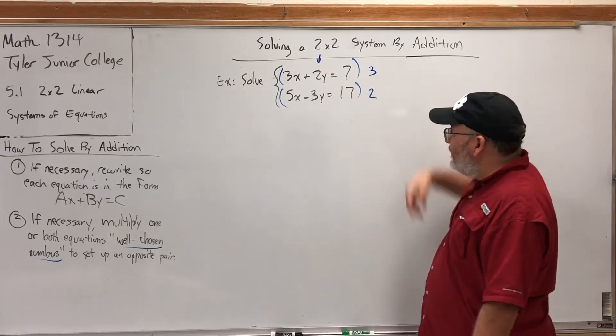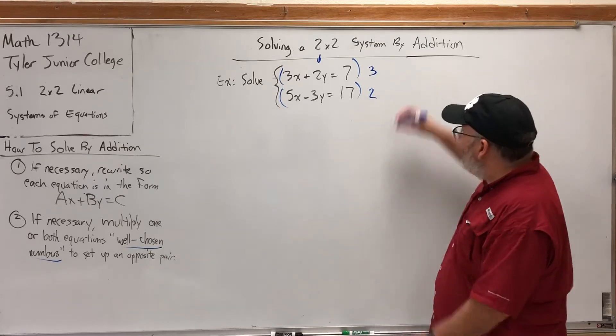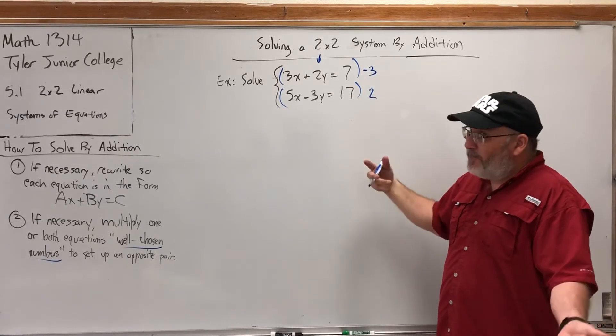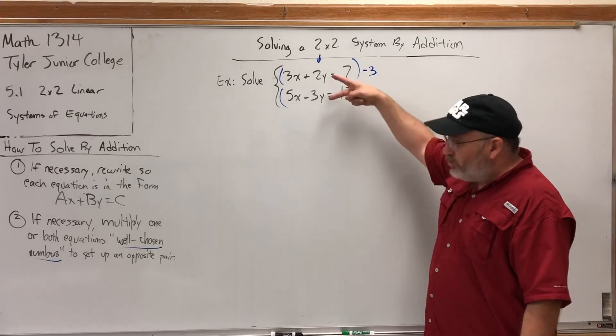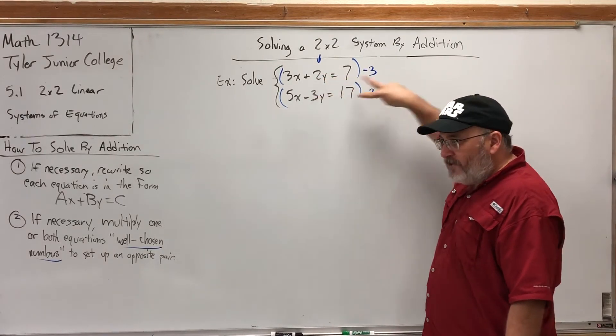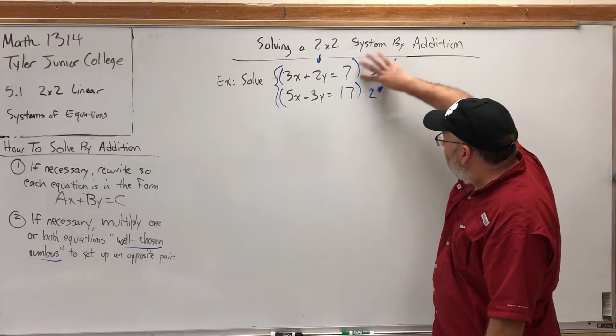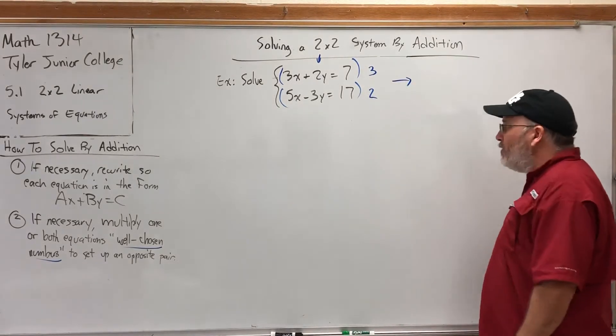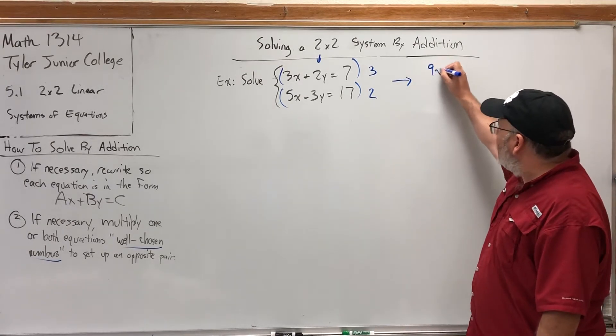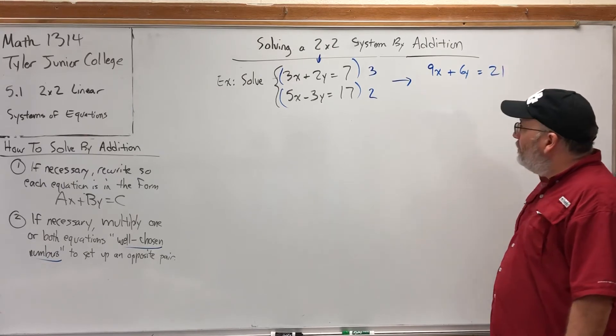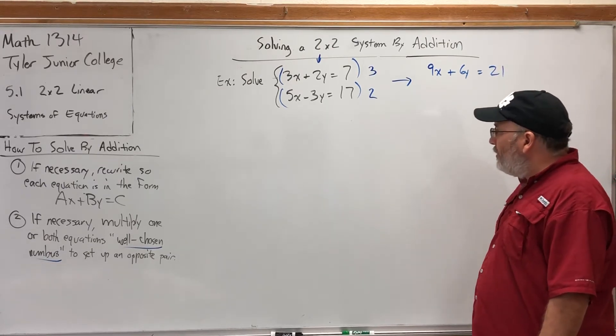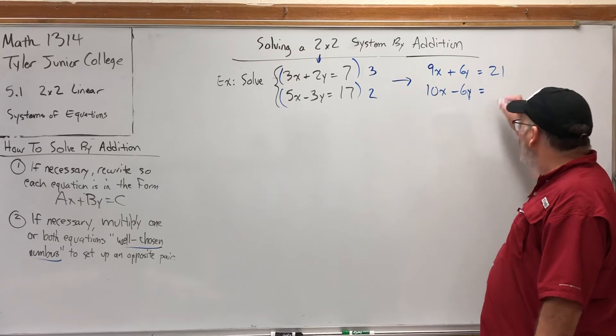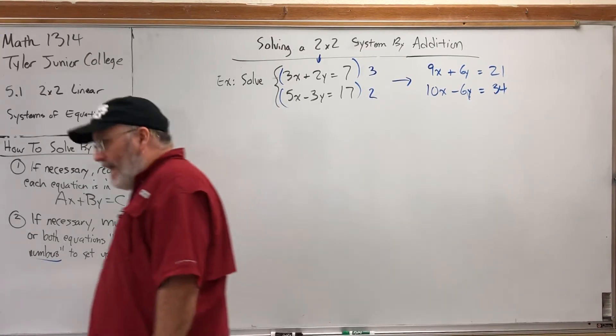I guess I could just say switch the coefficients and change one of their signs. If I were to switch them without changing signs and use the negative 3, then I do have exactly the same multiplication problem, which would give the same answer, not opposite answers. So, for well-chosen numbers, choose a variable, reverse their coefficients as multipliers, but change the sign of one of them. In this case, I changed the sign of the negative 3 to a positive 3. Let's see what that will give us. If we multiply the top equation by 3 all the way across, we'll get 9x plus 6y is equal to 21. If I multiply the second equation by 2 all the way across, I'll get 10x minus 6y equals 34. And I have opposites.